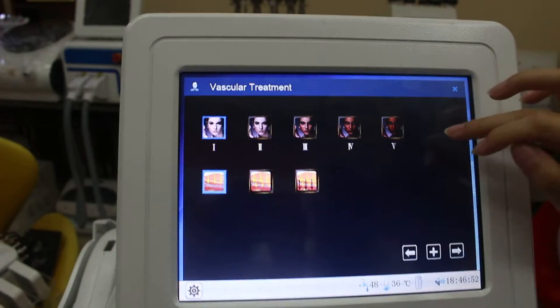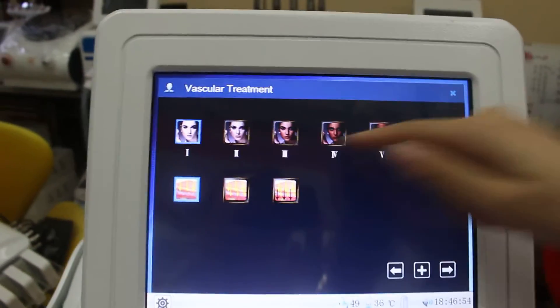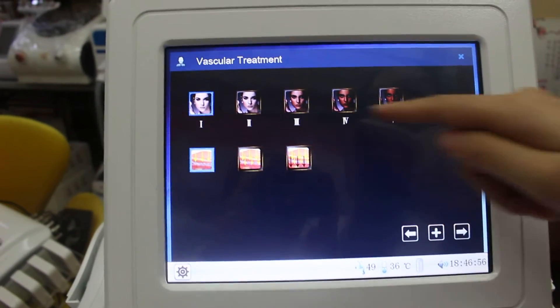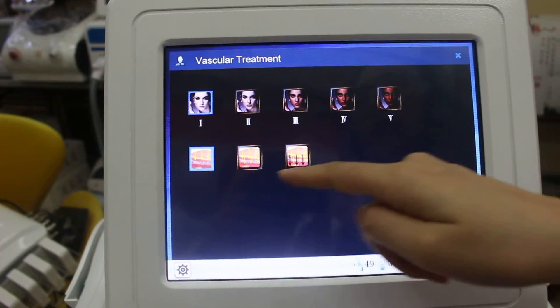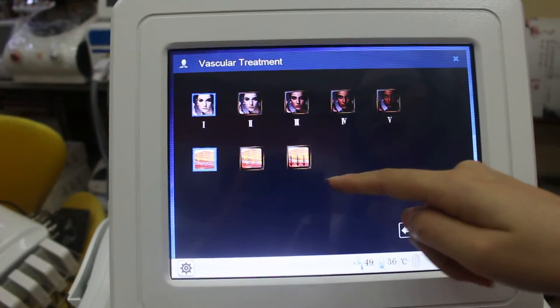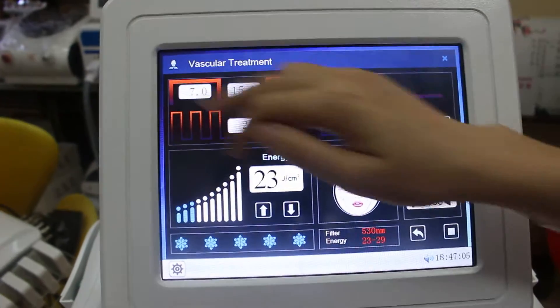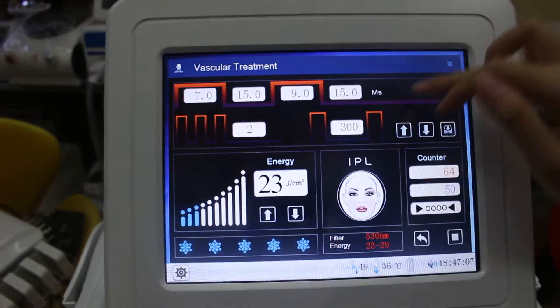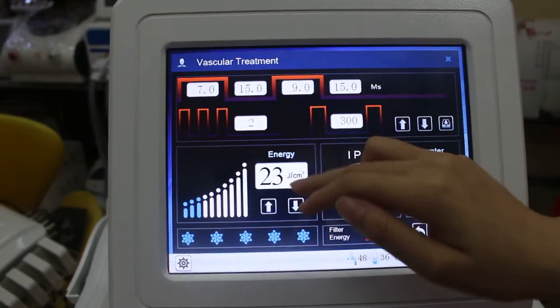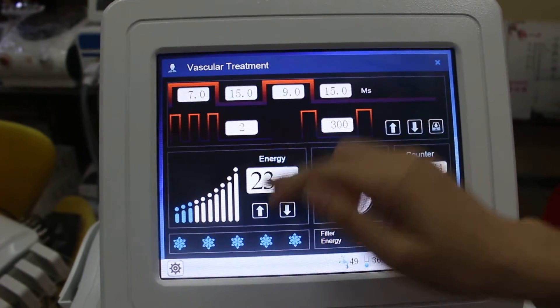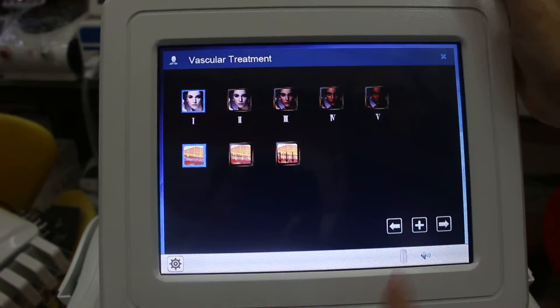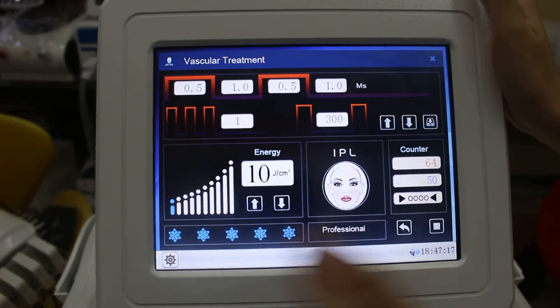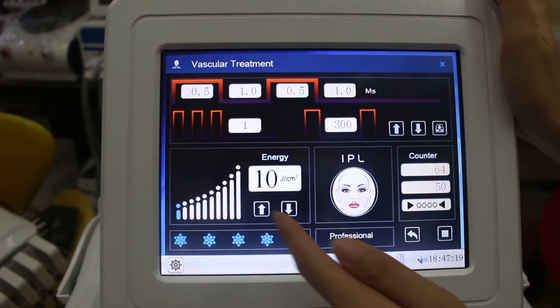This is for the skin tissue. You can choose the color of your skin and the shape of the red blood. In this mode, you cannot adjust these parameters. You can only adjust energy and cooling system. In this mode, you can adjust all the parameters.